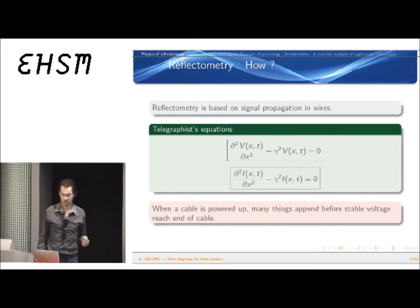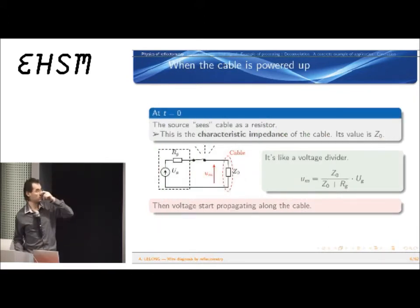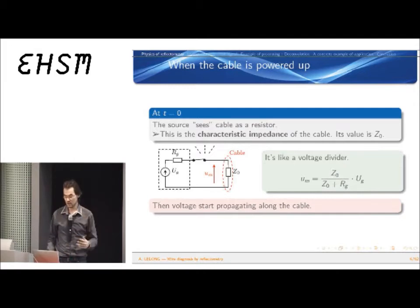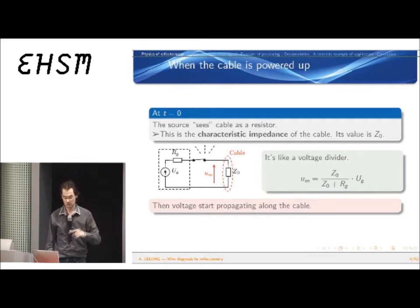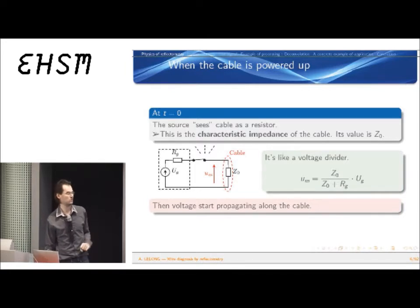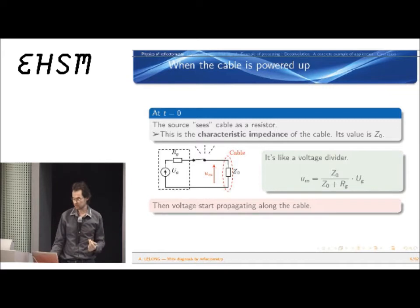In fact, when you plug a wire to a voltage source, the voltage does not reach the end of the cable immediately. Many things happen before that, and the wave propagates from the source to the end of the cable and back. There can be many travel cycles of waves before reaching a stable voltage state in the wire. At the moment you plug the wire, the voltage source sees it as a single resistance — what we call the characteristic impedance of the wire.